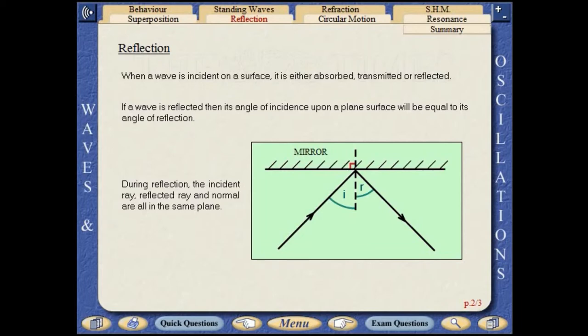When a wave is incident on a surface, it is either absorbed, transmitted, or reflected. If a wave is reflected, then its angle of incidence upon a plane surface will be equal to its angle of reflection.